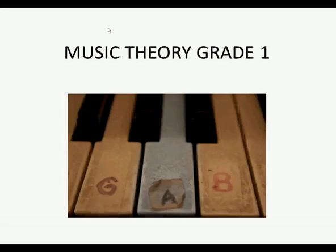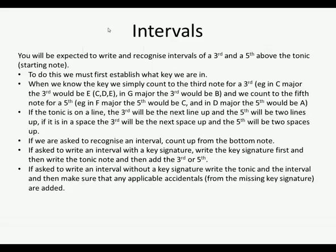Hi guys, welcome to Music Theory Grade 1, Part 5: Intervals. For intervals, you will be expected to write and recognize intervals of a third and a fifth above the tonic. Remember, we learned about tonics in the last lesson — a tonic is the first note of the scale, or really the note of the key signature. For example, in C major, C would be your tonic; in F major, F would be your tonic.